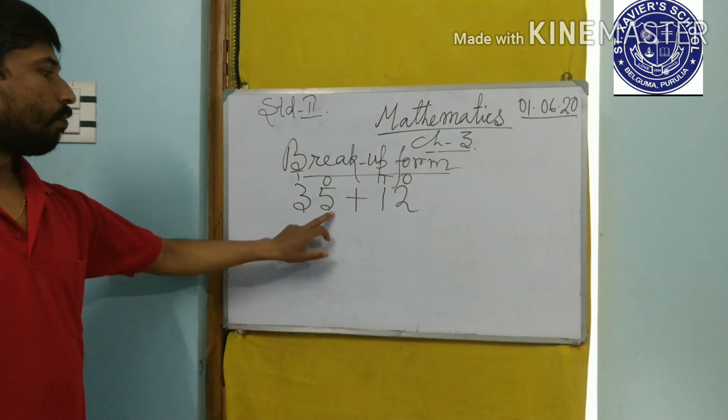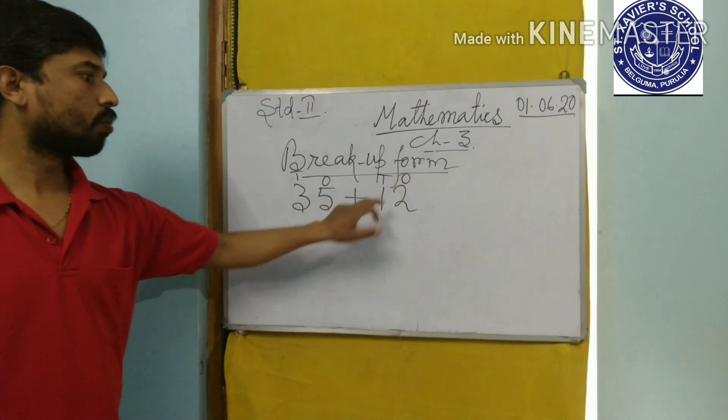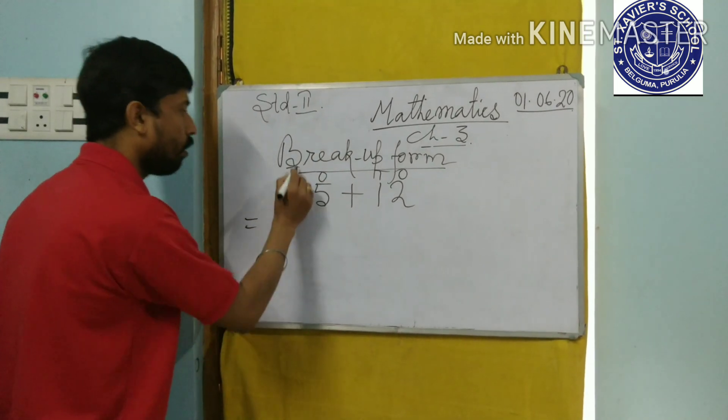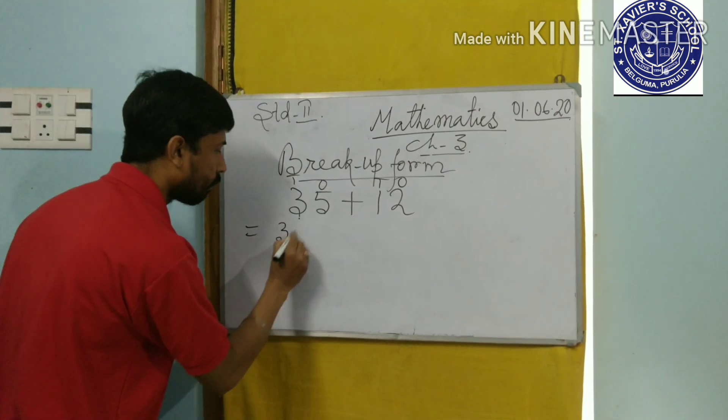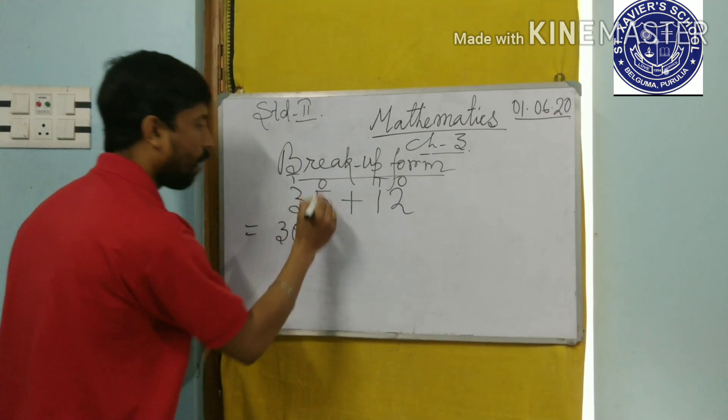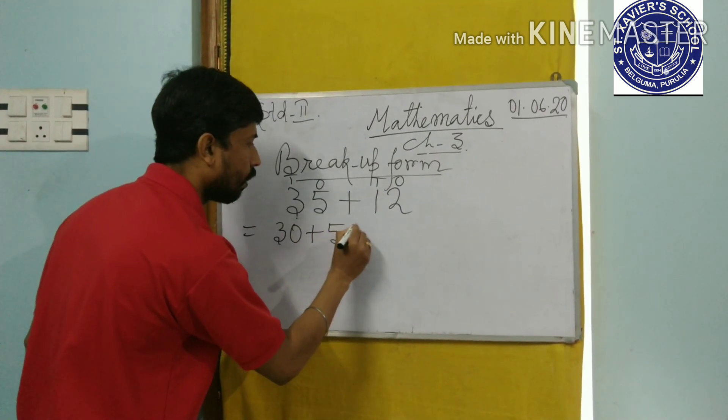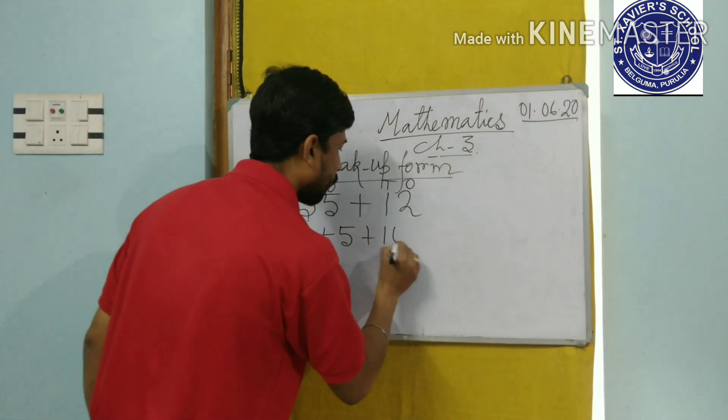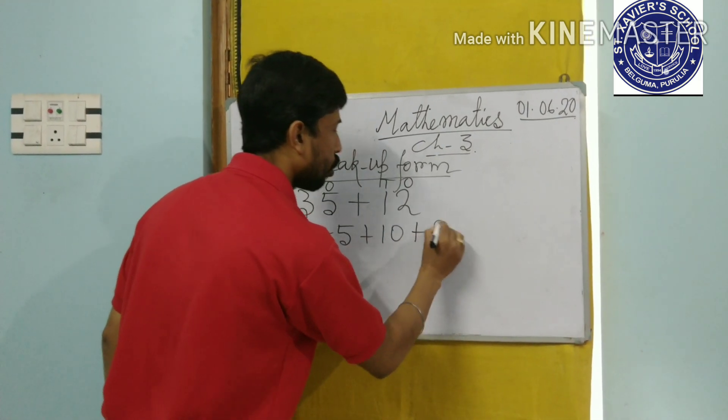So see, 5 ones, 3 tens. Here, 2 ones, 1 ten. Now, how to break it up. As you know, 3 tens means 30 plus 5 ones means 5. Here, 1 ten means 10 and 2 ones means 2.